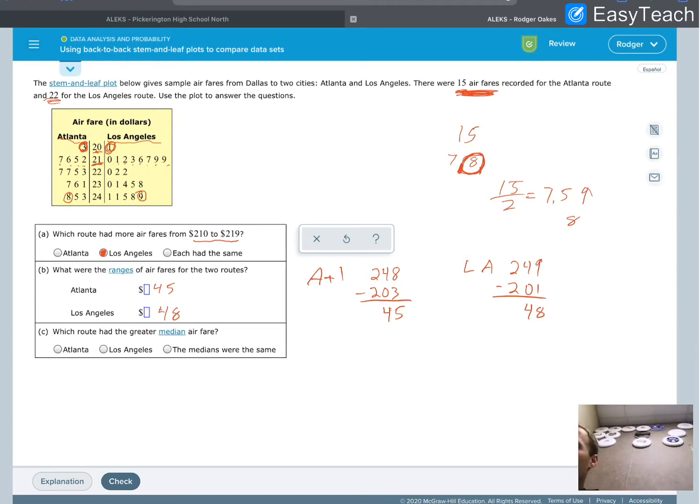So for Atlanta, I need the 8th value. I count the 3. That's 1, 2, 3, 4, 5, 6, 7, 8. This 7 should be halfway between. That represents 227 for Atlanta.